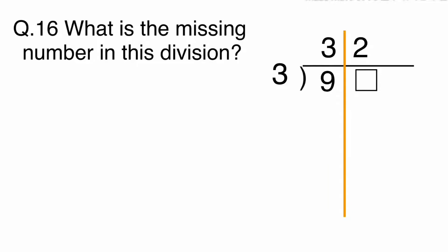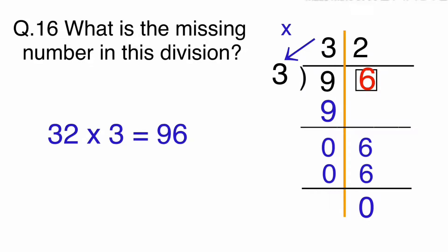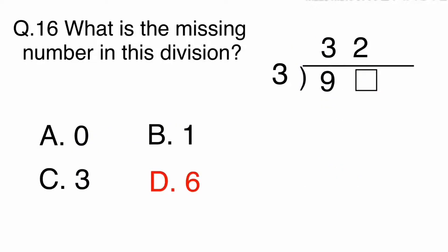Let's look at the division column method. 90 divided by 3 equals 30. 6 divided by 3 equals 2. So the missing number is 6. Or you can multiply 32 times 3 to find the answer, which is 96. The answer is D. 6.